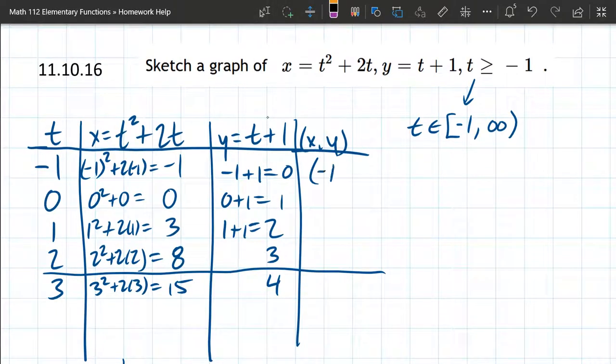Alright, so I'm going to write the points here, the x, y points. Negative 1, 0. 0, 1. And again, these are coming from the x, y coordinates, not the t values.